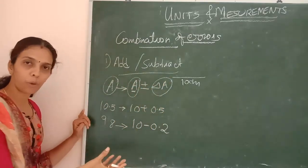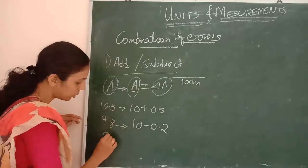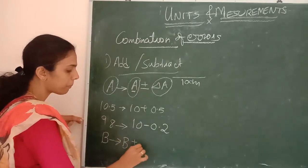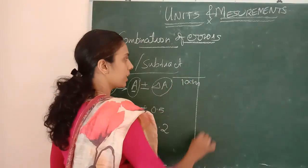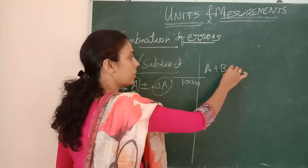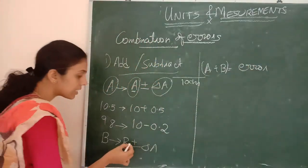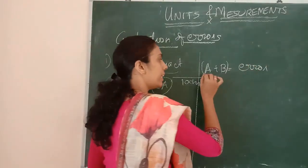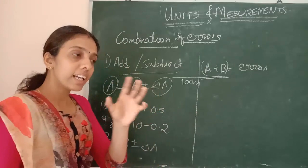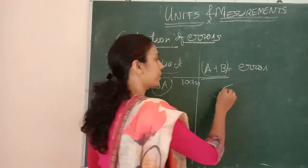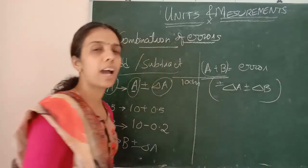Error can be either a little bit positive or a little bit negative. While we are adding two terms — B is written as B plus or minus delta B. If I am adding A and B, what will happen to the errors? Errors also will be added up. So while finding out A plus B, the error will be delta A plus delta B.